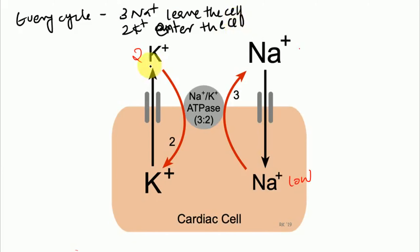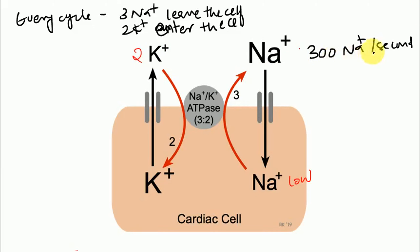Conformational changes occur rapidly during the cycle, enabling each carrier to transport as many as 300 Na+ per second. This transport of sodium and potassium appears to exist in all animal cells. This is what the sodium potassium pump is all about. We will discuss coupled transport in the upcoming video.